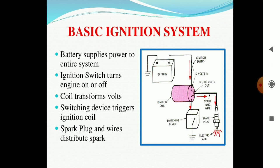The supply moves towards the coil. The coil, in the diagram you can see in red color, transforms the volts. The switching device triggers the ignition coil. The spark plug and wires distribute the spark equally among the spark plugs.